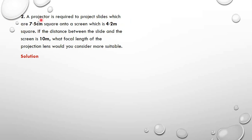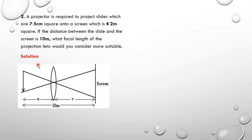So this is the object — that is the slide — and this is the image. We have a slide, the projection lens, and then the screen. The distance from the slide to the lens is U, and from the lens to the screen is V. The total distance U + V = 10 meters. Since I have the object area and image area, I can get the magnification.